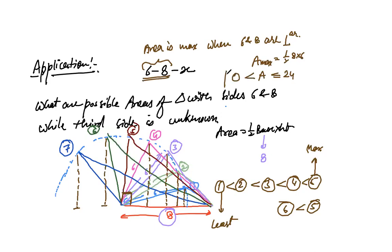For sides six and eight, maximum area = ½ × 8 × 6 = 24. So with only these two given sides, the area can range from 0 to 24. If any answer option gives an area greater than 24, it certainly cannot be the area of the triangle with sides six and eight.